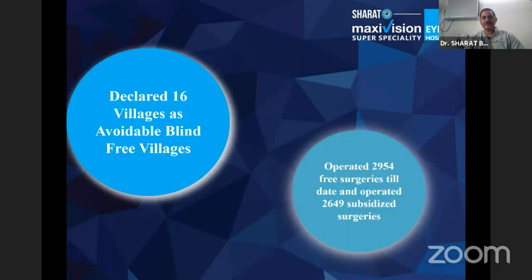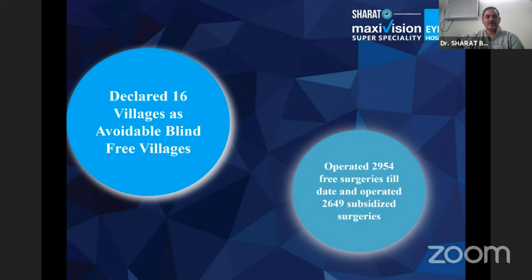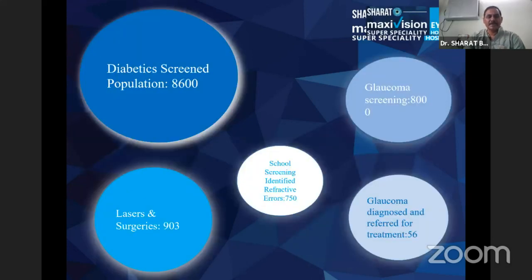We adopted a city-wide diabetic retinopathy screening program covering a population of 10 lakh. We screened almost 8,600 patients in the blind-free villages and started treating them with different types of laser treatment, asking them to return for follow-up.